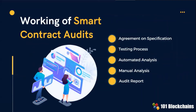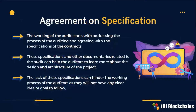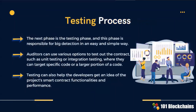This section describes the most important steps of smart contract audits. The first step is agreement on specification, where auditors can learn more about the design and architecture of the project. The next phase is the testing phase, where auditors will use various options to test out the contract, helping developers understand the project smart contract's full functionalities and performance.